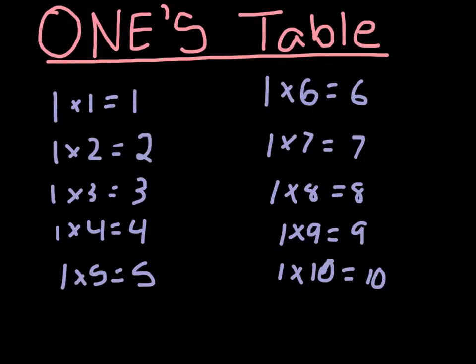So this is our ones table. Make sure to memorize this. I'll read it out for you: 1 times 1 is equal to 1, 1 times 2 is equal to 2, 1 times 3 is equal to 3, 1 times 4 is equal to 4, 1 times 5 is equal to 5, 1 times 6 is equal to 6, 1 times 7 is equal to 7, 1 times 8 is equal to 8, 1 times 9 is equal to 9, and 1 times 10 is equal to 10. Make sure to memorize this — it is very, very important.